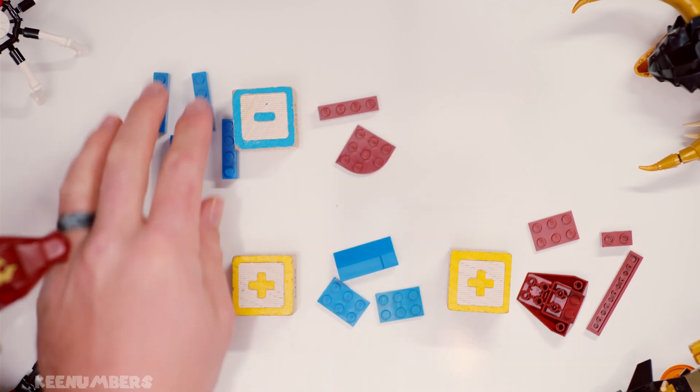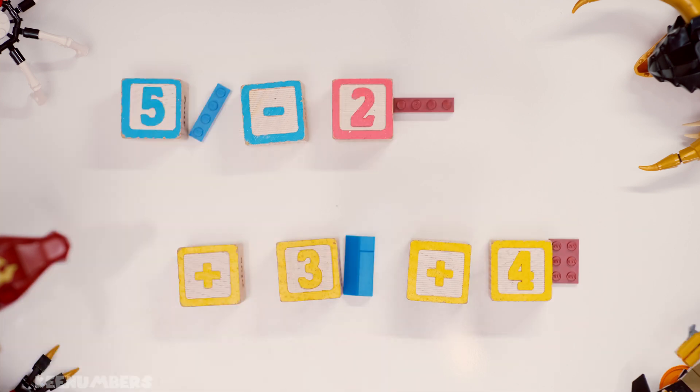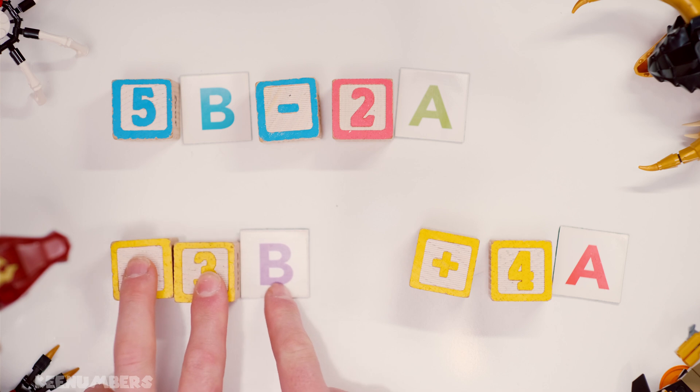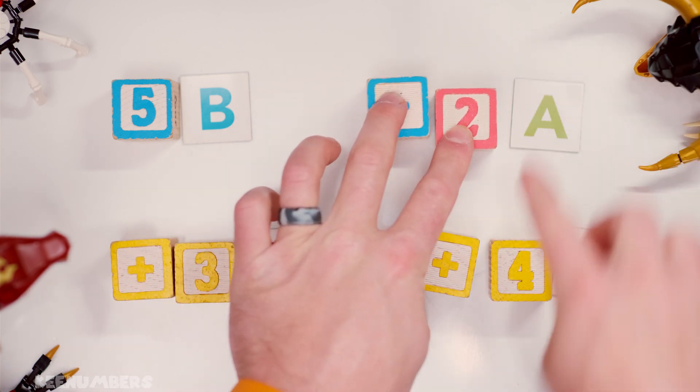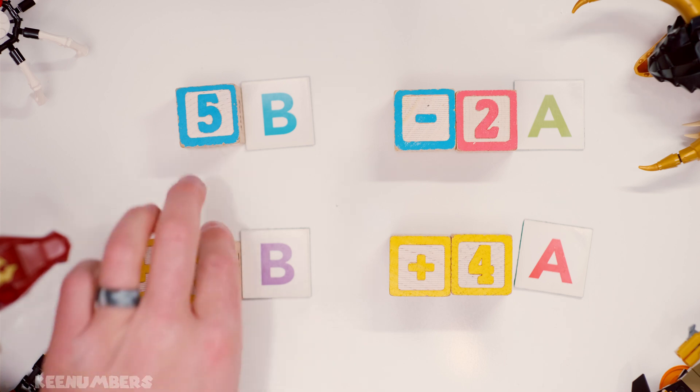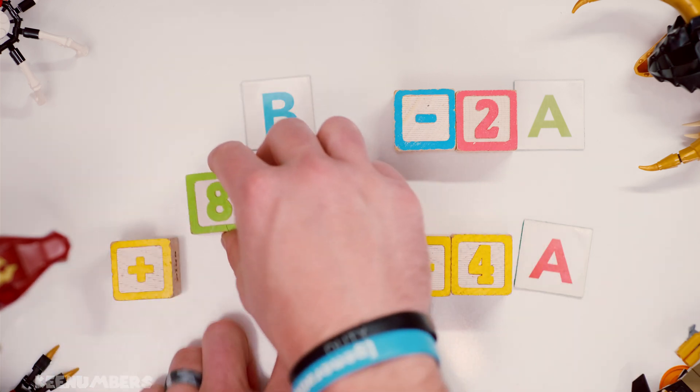Four blue bricks take away two amber bricks plus three blue bricks plus four amber bricks. We're trying to make our life simple here, so we're gonna write B for blue and A for amber. That means we have five blue bricks and three blue bricks, that's also known as eight because five plus three.